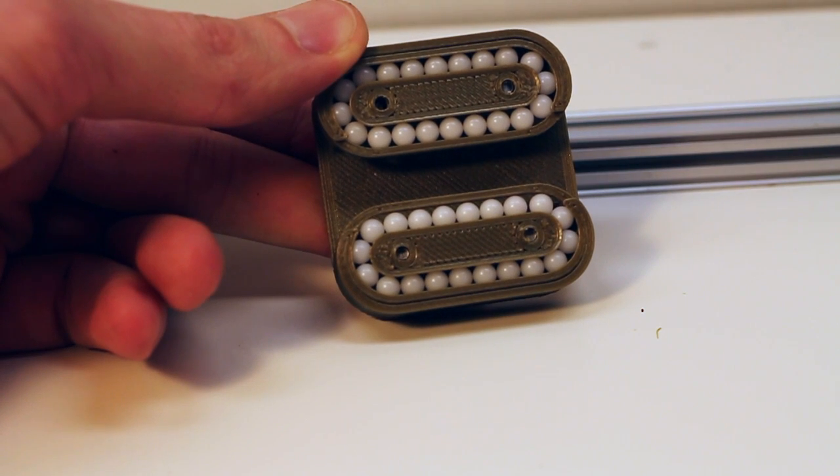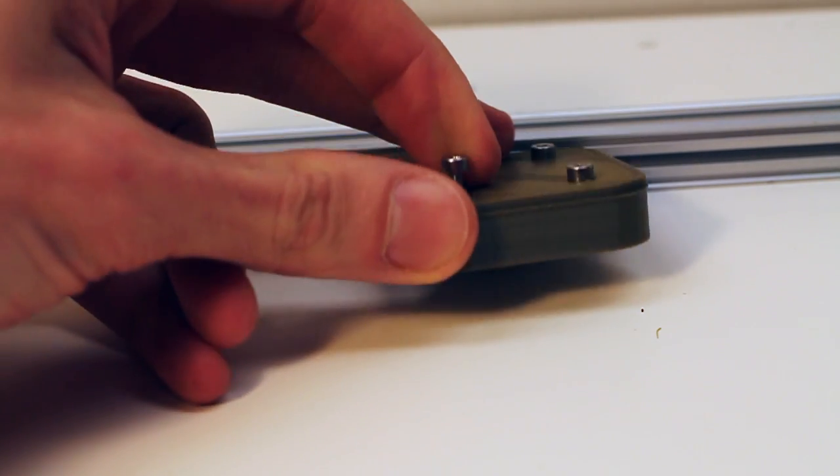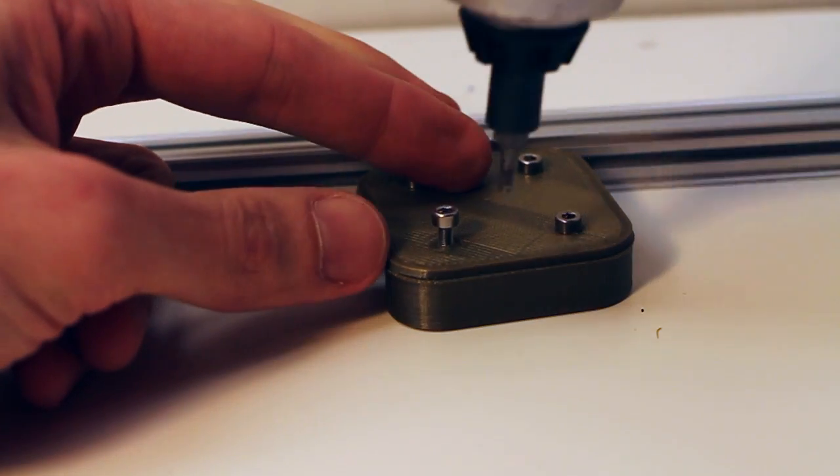So in order to make a carriage I install these two halves on a 3D printed plate like this.